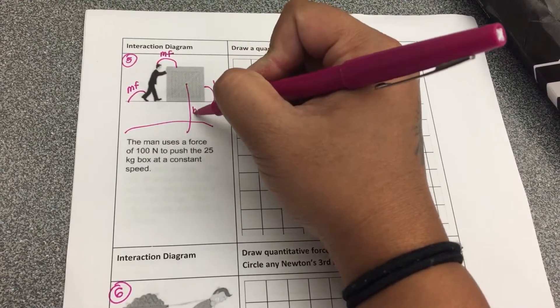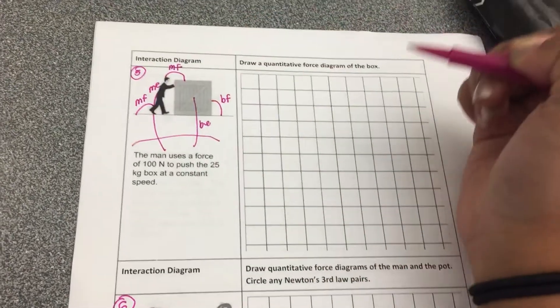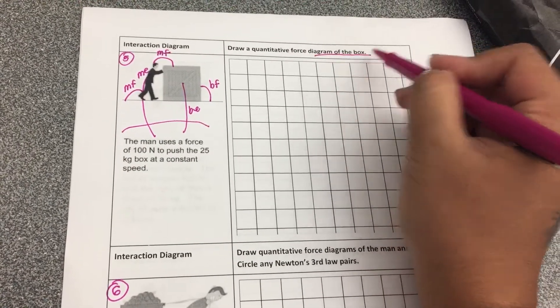And the box is interacting with the earth. And the man is interacting with the earth. So now I'm going to draw the force diagram for the box.